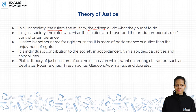Plato's theory of justice is about how a society can establish a just order — what we might call 'Ram Raj' in the Indian context. According to Plato, in a just society, the rulers, the military, and the artisans all do what they ought to do.